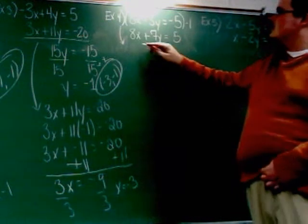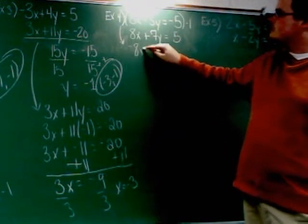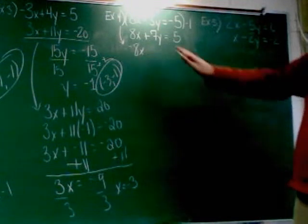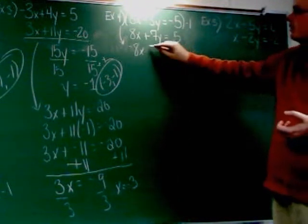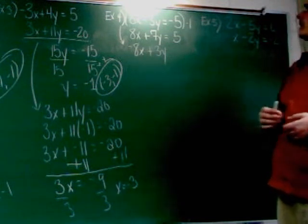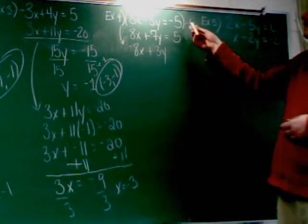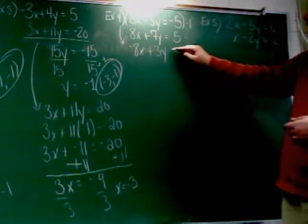So instead of 8x, it's going to be negative 8x. Instead of minus 3y, it's going to become plus 3y. And instead of negative 5, it's going to be 5.